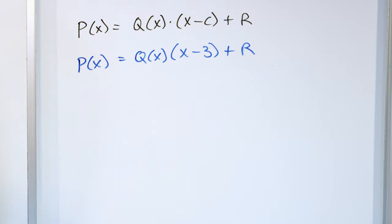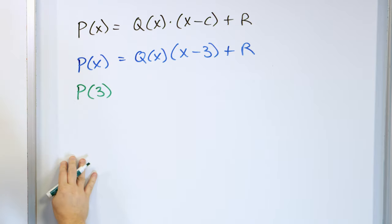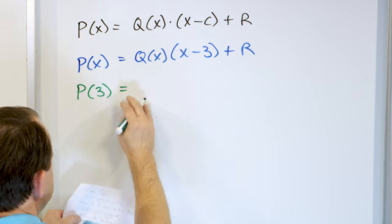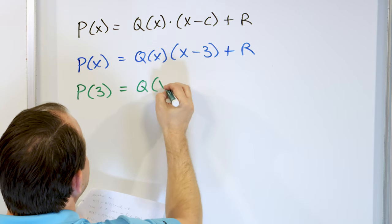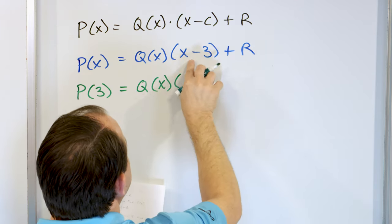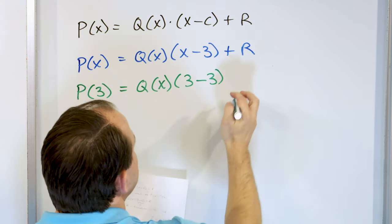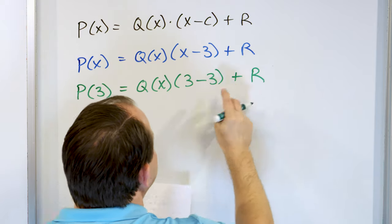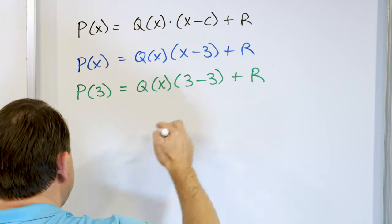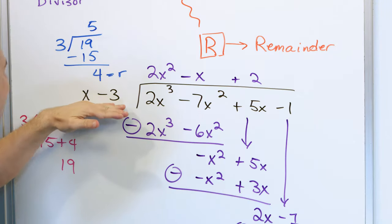So if I want to evaluate the polynomial at x equals 3, that means I take the quotient and plug the value of 3 in here, and I have to add my remainder. Notice what's happened — 3 minus 3 is zero. When you divide by x minus 3, you're dividing by a very special thing because eventually you want to plug in a value of 3.